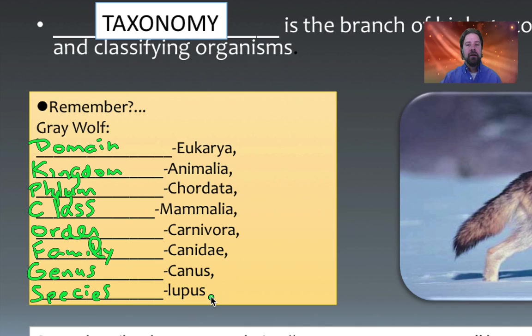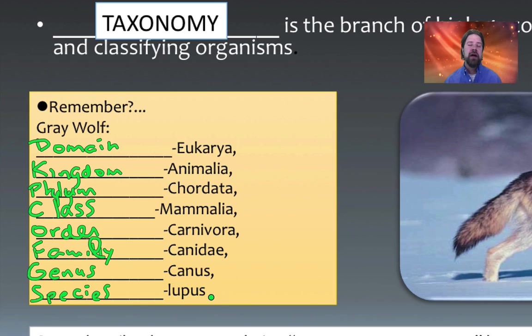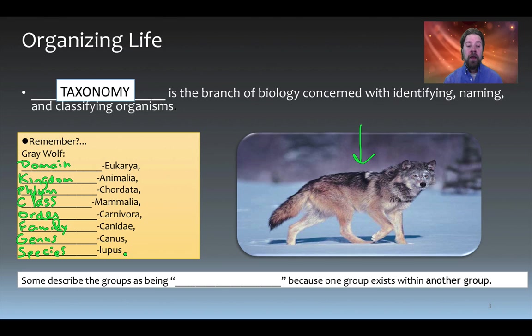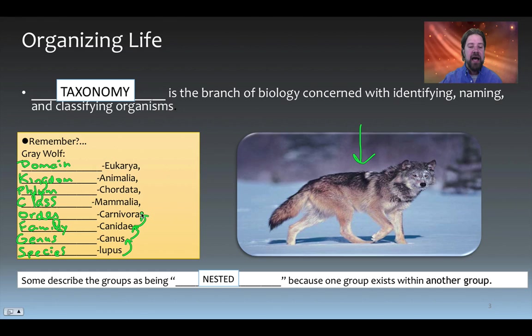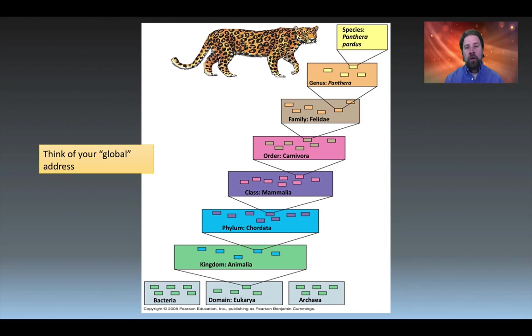We are classifying from the most specific — species — all the way to the broadest term, domain. Each level is nested in the one above it. When we say a group is nested, it means it exists within the level above it, usually alongside multiple other groups. Each lower group is nested in the one above it.